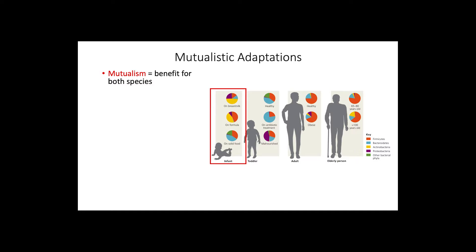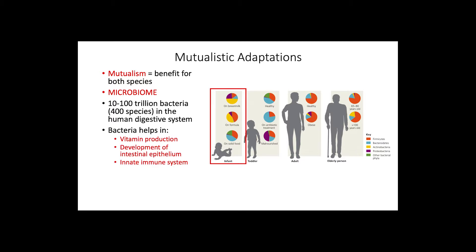Animal digestive systems also present mutualistic adaptations. Mutualism refers to the relationship between two species where both of them obtain benefits. The major mutualistic relationship regarding the digestive system is with the microbiome, a collection of all microorganisms in the body. Previous studies have estimated that there are between 10 and 100 trillion bacteria in a human digestive system, with more than 400 species. Mutualism with bacteria helps in vitamin production, development of intestinal epithelium, and proper functioning of the innate immune system. However, there are differences in the microbiome of each individual, often arising from diet, disease, and age.